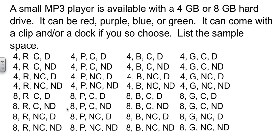And everything that we set up here also applies to choosing an 8-gig. We could get 8 with each color, and we could get both clip and dock, we could just get clip, just get dock, or take neither one for each color. So we end up with 4, 5, 6, 7, 8, times 4, 32 possible things in the sample space.